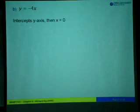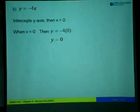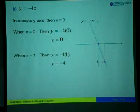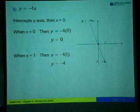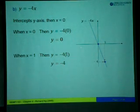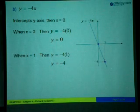Let's look at another example. If we are given y equals negative 4x, the y-intercept is when x equals 0, giving y equals 0. To find the x-intercept, substituting y equals 0 also gives x equals 0, so both intercepts are at the origin. In this case, we take another value of x — let's say x equals 1. Substituting x equals 1 gives y equals negative 4. So mark the origin and the point (1, -4), then join these two points to draw the line.